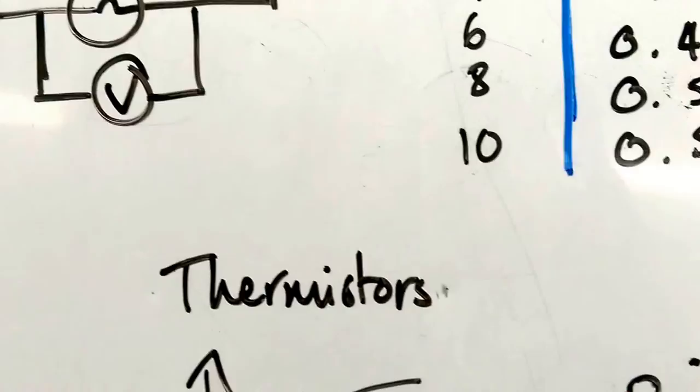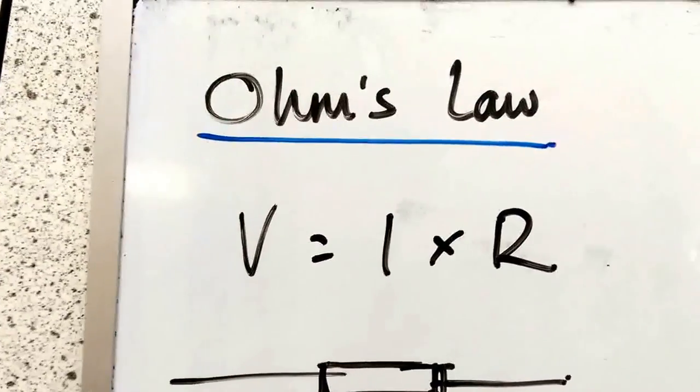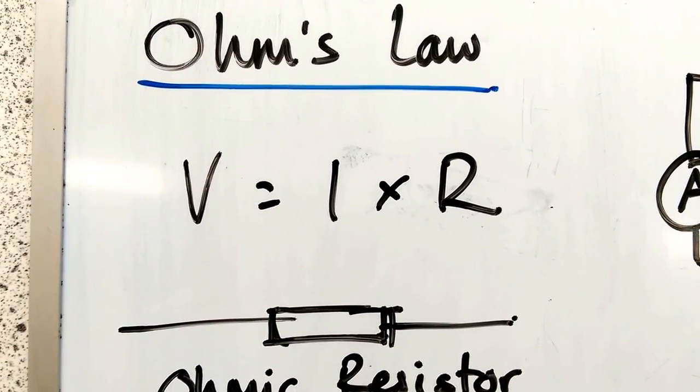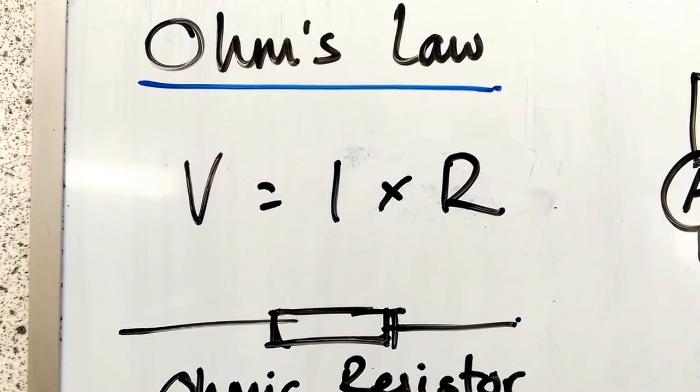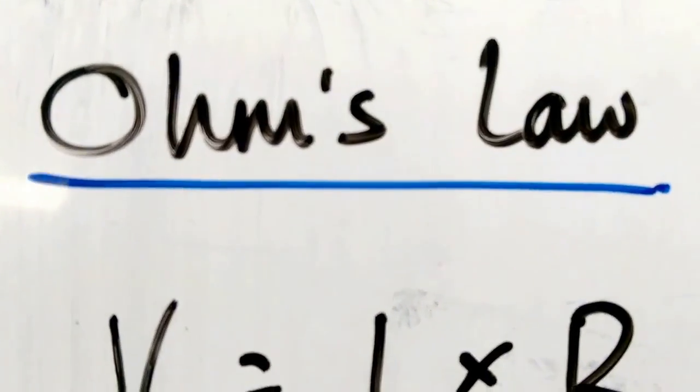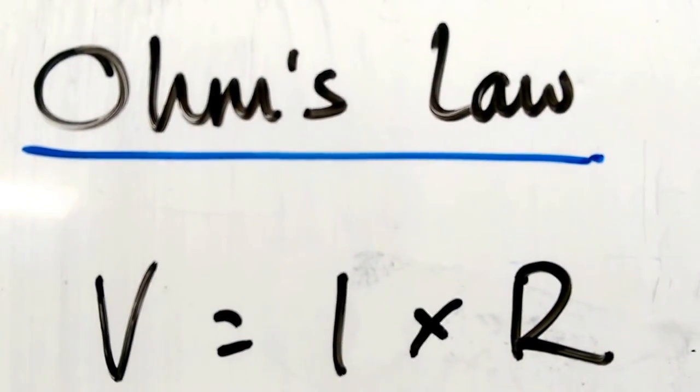But you can always bet on Ohm's law, and you can always use that equation, V equals IR, to calculate resistance if you know voltage and current, or any one of them if you know the other two. You can always apply it because it's the law.